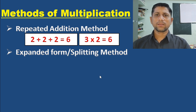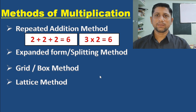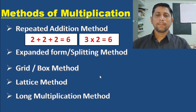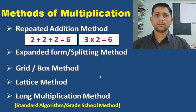If children are aware of place values, the splitting method is very useful for grades one, two, and three. The third method is the grid or box method, which is similar to the splitting or expanded form method. The fourth is the lattice method, which I will explain in detail — how to use it to multiply numbers. The fifth is the long multiplication method, generally the textbook method, also called the standard algorithm or school-grade method.